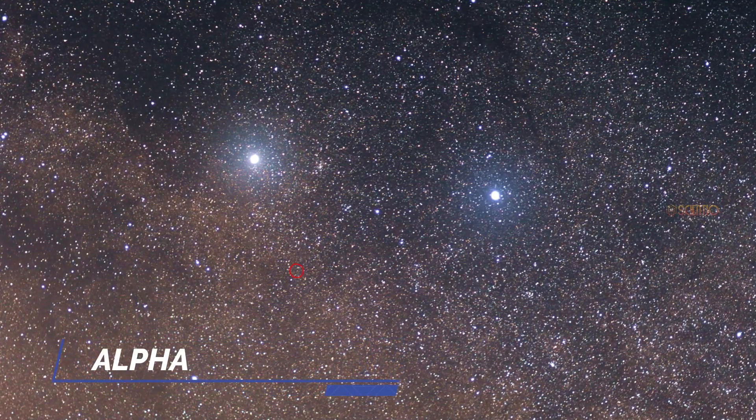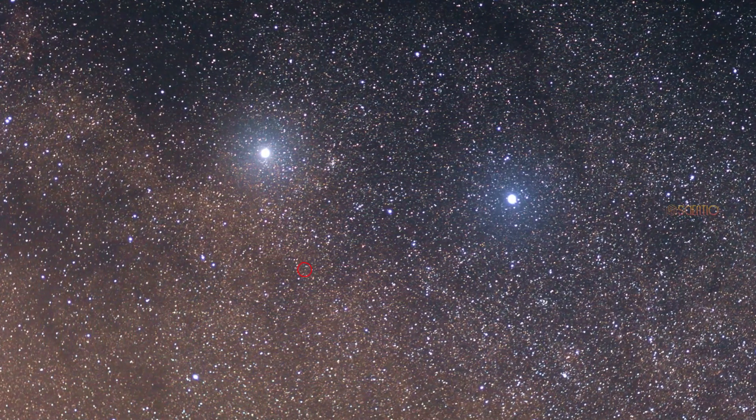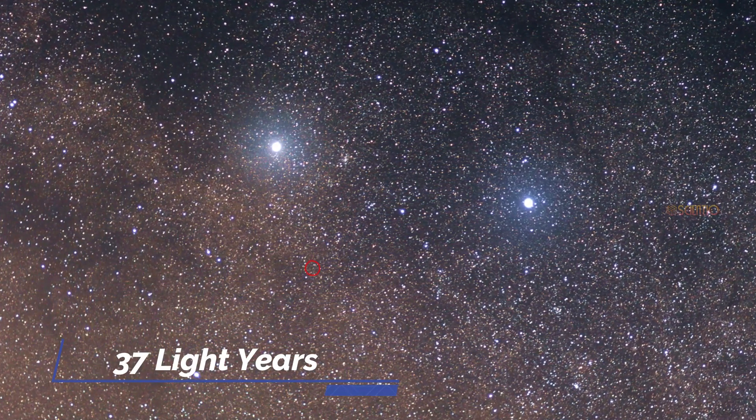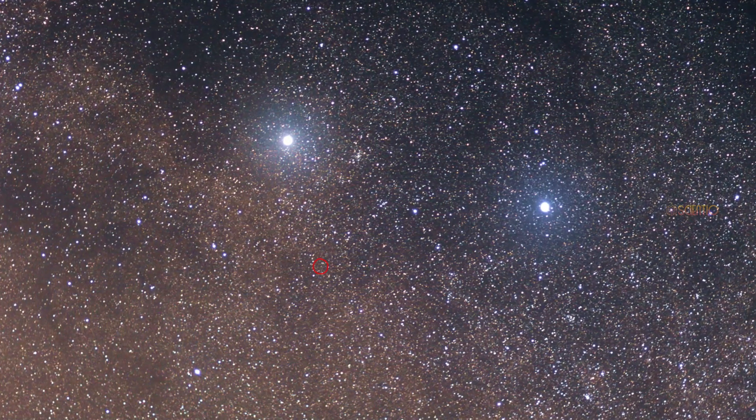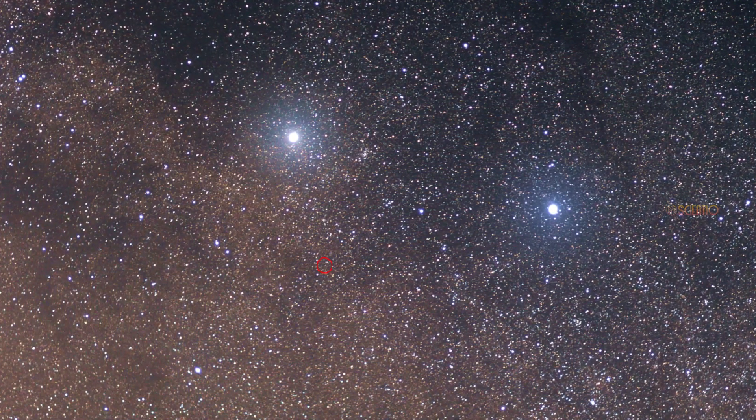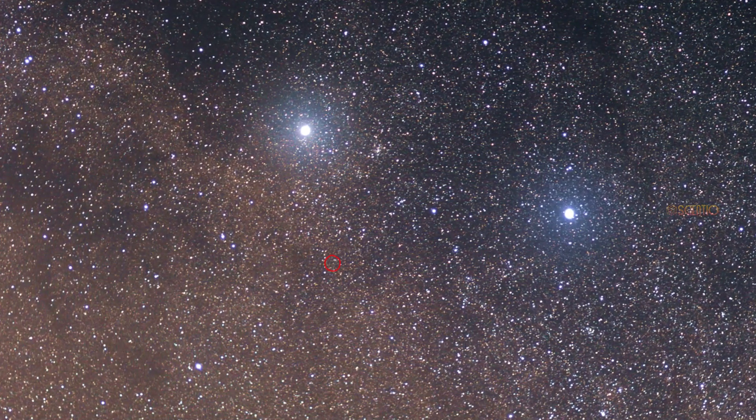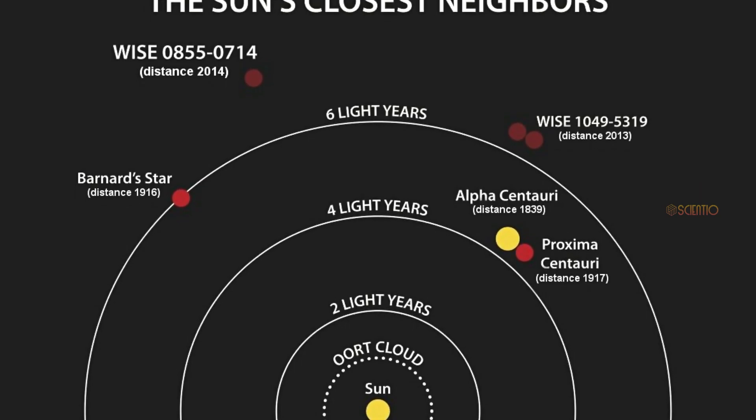Alpha Centauri. This is a triple star system located about 4.37 light-years away from our solar system. One of the stars, Proxima Centauri, is the closest to us, while the other two, Alpha Centauri A and B, are slightly further away. Together, they make up the closest star system to our solar system.